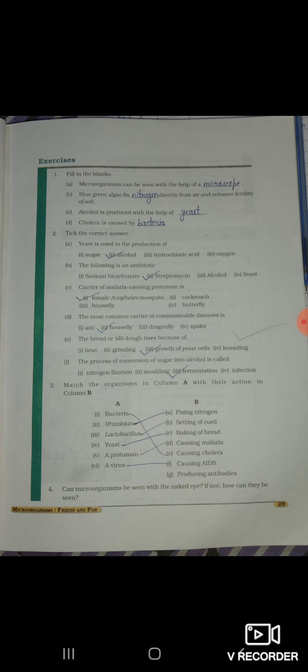Second chapter, first question is, fill in the blanks. Isko padh lenge aap. Microorganisms can be seen with the help of microscope. Blue green algae fix nitrogen directly from air and enhance fertility of soil. Alcohol is produced with the help of yeast. Cholera is caused by bacteria.